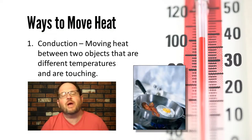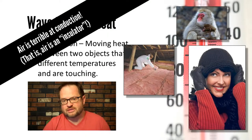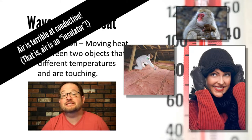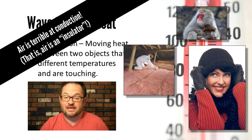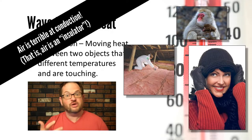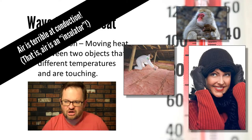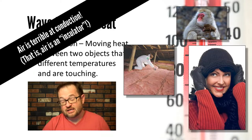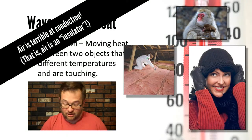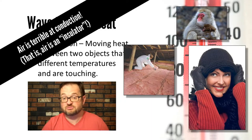Conduction is an important way heat is moved in the Earth's atmosphere, except that the atmosphere is actually terrible at moving heat by conduction. We actually exploit the fact that air is terrible at conduction in our day-to-day lives — that's how insulation in your attic works. Insulation is fluffy, foamy stuff that has little trapped air pockets in it.